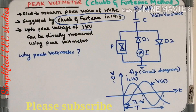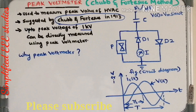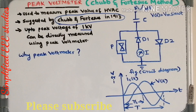As you know, the peak value will be responsible for the breakdown of dielectric material. So by using this method it is possible to measure the peak value directly. That is the specialty of the peak voltmeter, or the Chubb and Fortescue method.